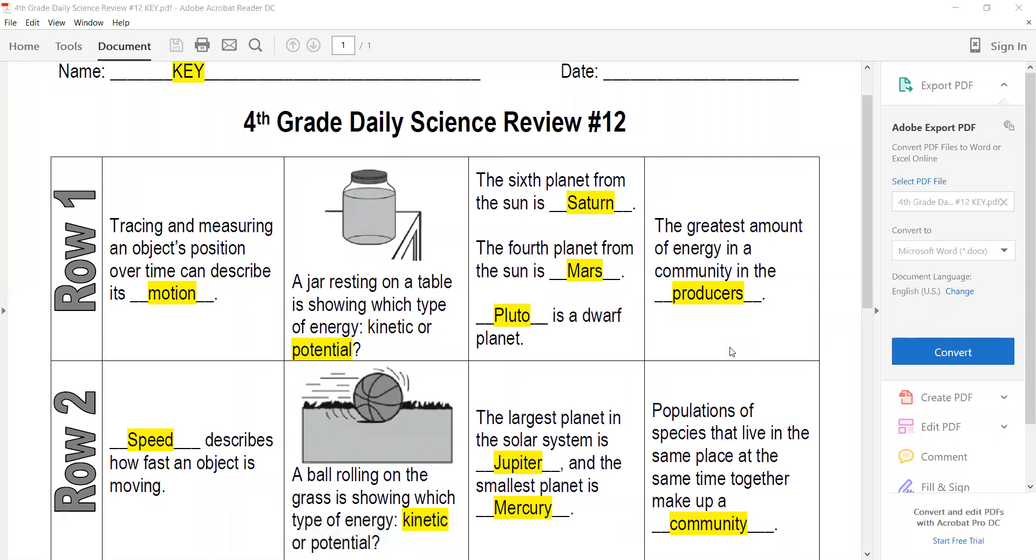Row one: tracing and measuring an object's position over time can be described as its motion. A jar resting on a table is showing what type of energy? That's potential. So when something's not moving, it has potential energy.